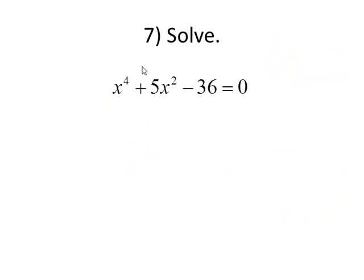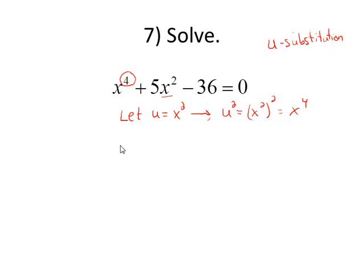Alright. This one looks a lot different than what we've seen before. We have an exponent that's bigger than 2. This is set up perfectly for a u-substitution approach. If you take a look at the variable parts of the first two terms, the first variable part is the square of the second variable part. And so if we let u equal x squared, we can make this a quadratic equation. u squared, then, would equal x squared squared, which is x to the fourth. That tells me that x to the fourth can be replaced by u squared, and x squared can be replaced by u. And now I have a quadratic equation in terms of u.